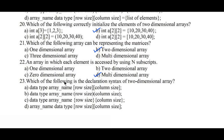Question number twenty-three: which of the following is the declaration syntax of a two-dimensional array? Option a) data type, array name, inside the square bracket, row size and column size. Option b) data type, array name, inside the round bracket, row size and column size. Option c) data type, array name, inside the curly braces, row size, column size. Option d) array name, data type, inside the square bracket, row size and column size. Option a is the right answer: data type, array name, and inside the square bracket, row size and column size. That's all for this video. Thank you very much for watching. We will see you in the next video.